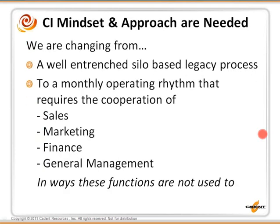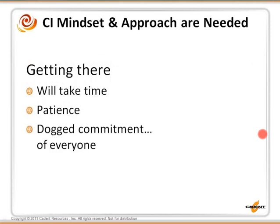Why is the continuous improvement mindset and approach needed? We're changing from a well-entrenched silo-based legacy process to a monthly operating rhythm that requires cooperation of sales, marketing, finance, and general management in ways these functions are not used to cooperating. You're building a skill within the organization, building a new operating rhythm — it will take time. Six months, one year, two years are not unheard of. People have to be patient, and there has to be a dogged commitment to see it through.